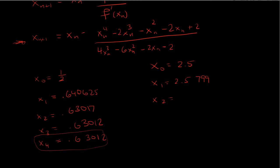For x two we're going to use 2.5799 plug it in for x sub n we get 2.5733. Okay and if we do the same thing for x3 and x4 we end up getting the same answer so it's safe to say that our other solution is roughly 2.5733.